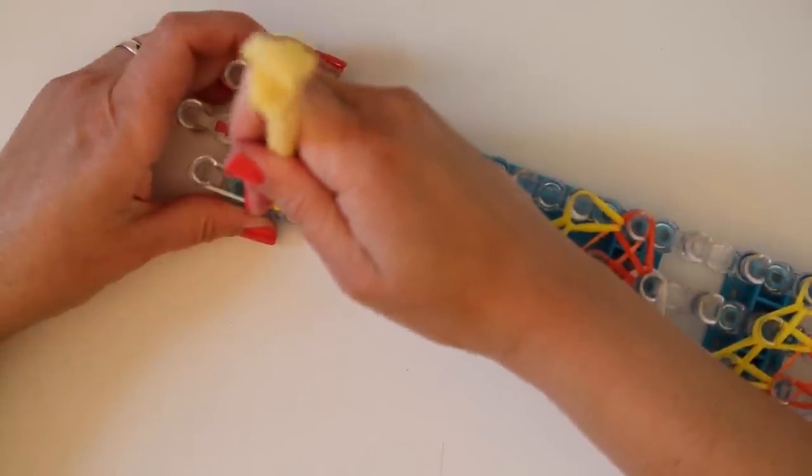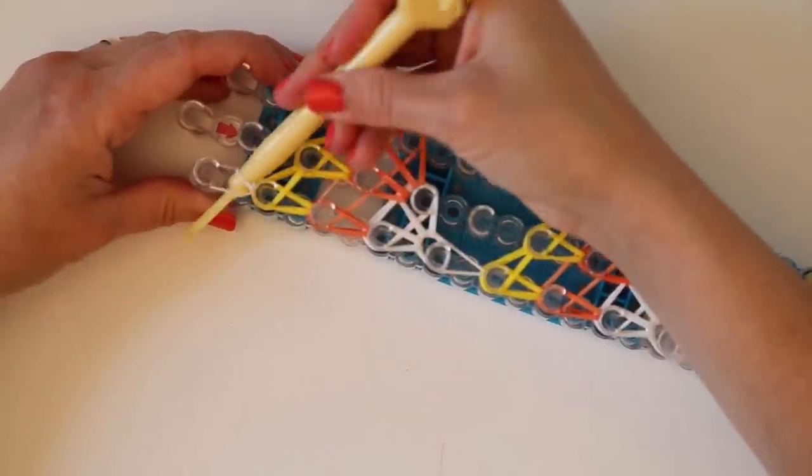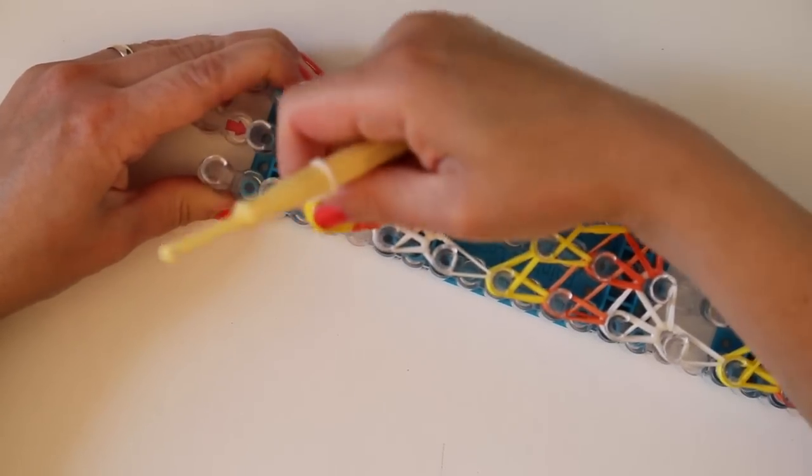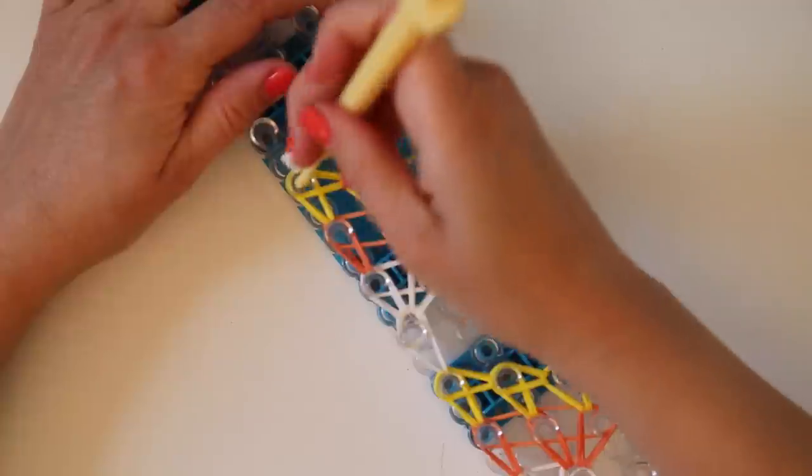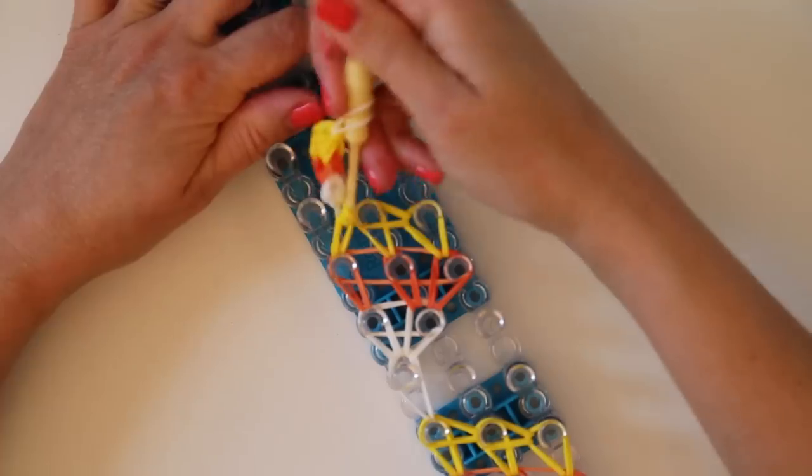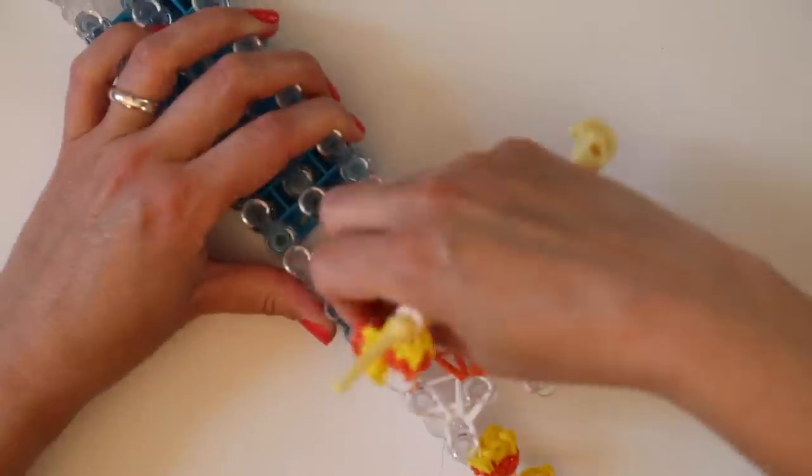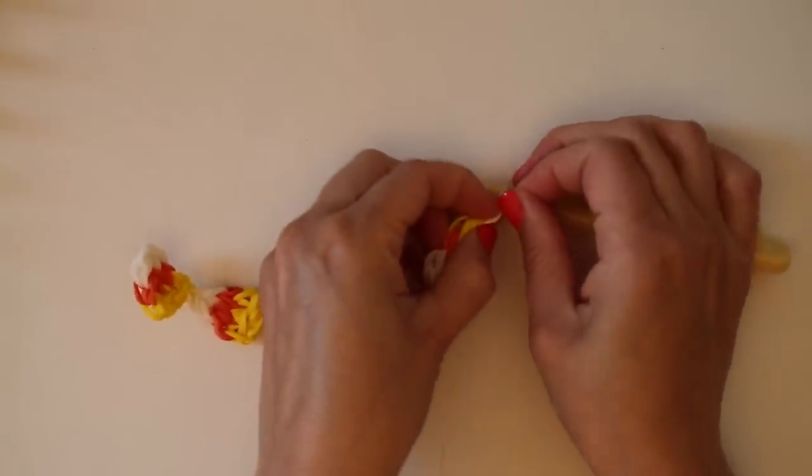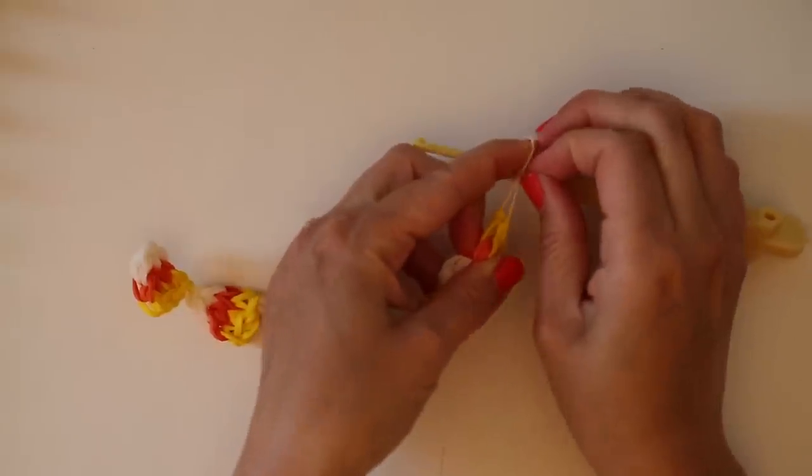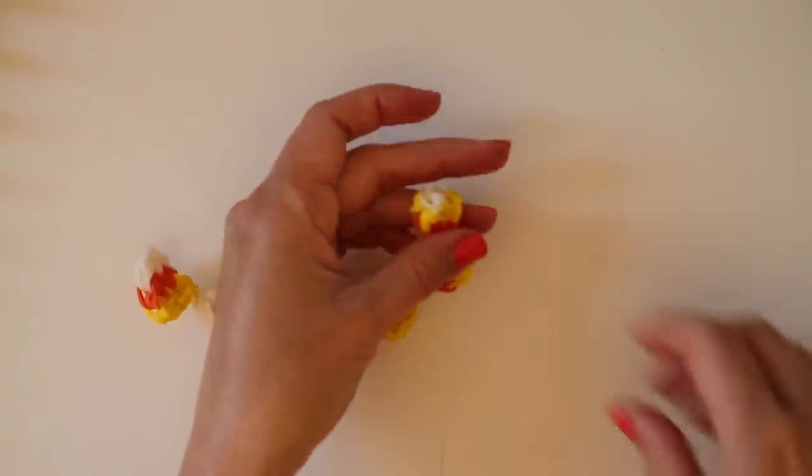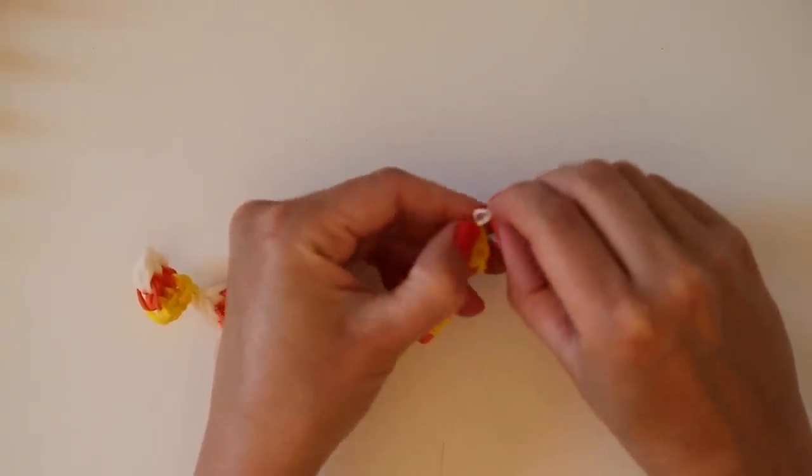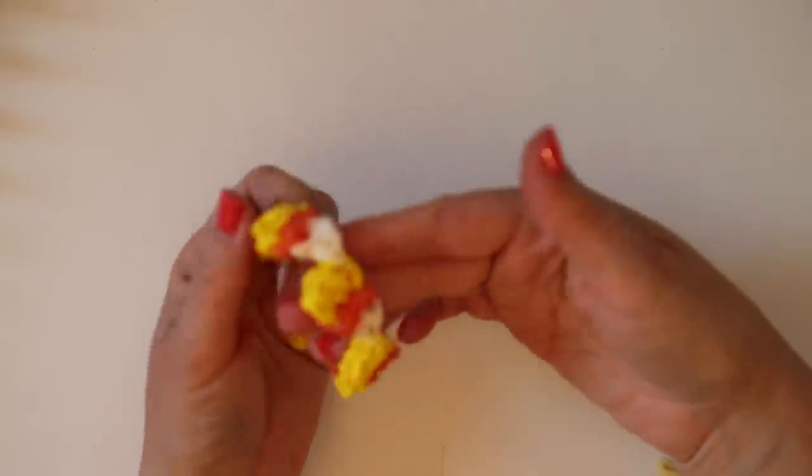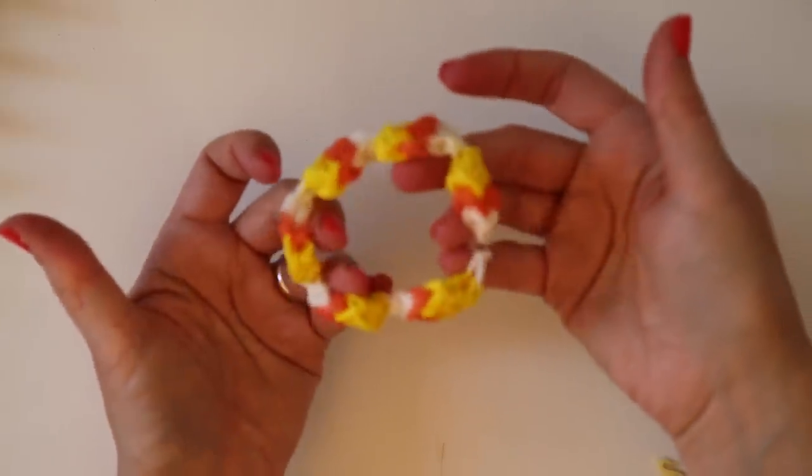And now we're at that last loop. Put both sides on the hook just like we did before and we can take our candy corn bracelet off of the loom using our hook on these corners just because otherwise that one band would be stretched too far. Okay, then we're going to grab a C-clip and put it on the two loops here. Then we can take it off the hook and connect to the other side. And your candy corn bracelet is ready to wear.